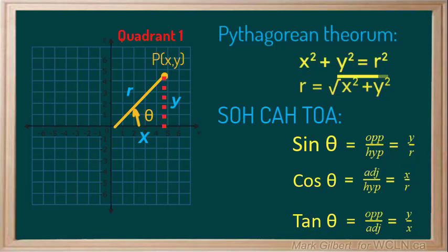Note that although the diagram shows theta in quadrant 1, the ratios would be the same in all four quadrants. The only difference would be the signs of the three ratios being either positive or negative.